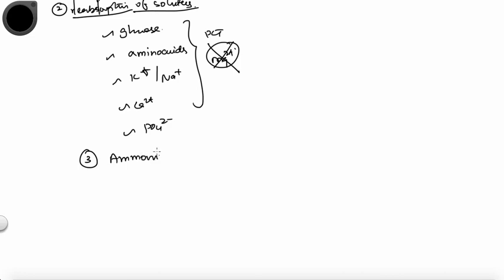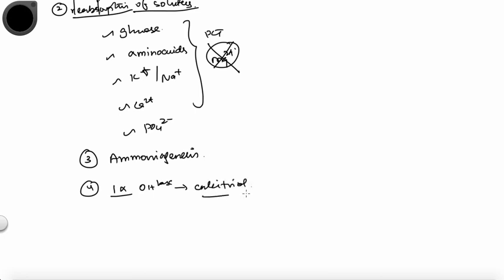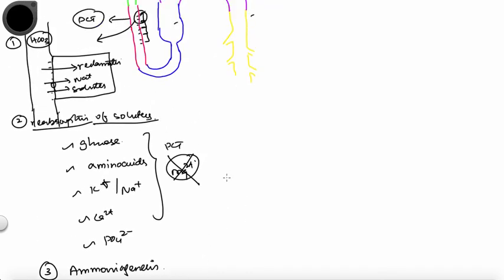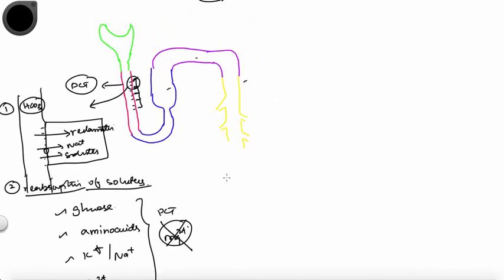Two other important functions of the PCT you should never forget: first, ammoniagenesis, which is very important and will be relevant later. Second, the formation of active vitamin D (calcitriol), because PCT cells contain the enzyme 1-alpha hydroxylase, which converts inactive vitamin D to its active form, calcitriol.